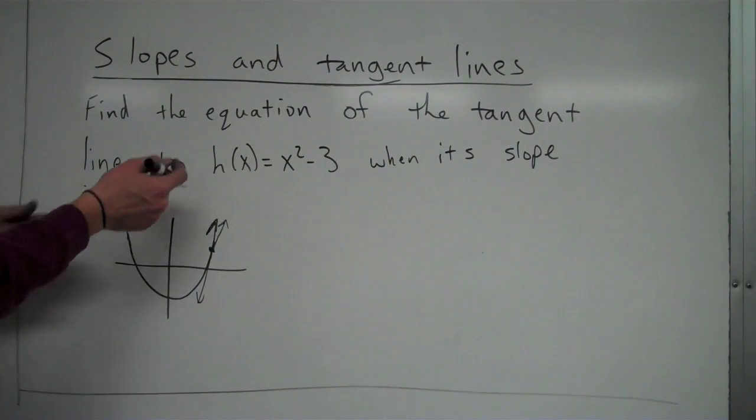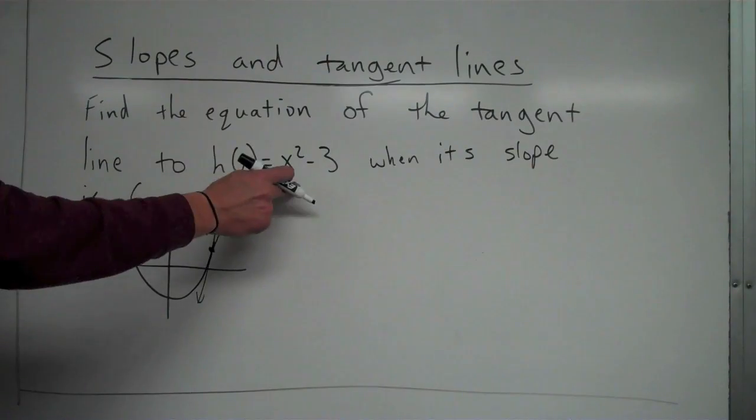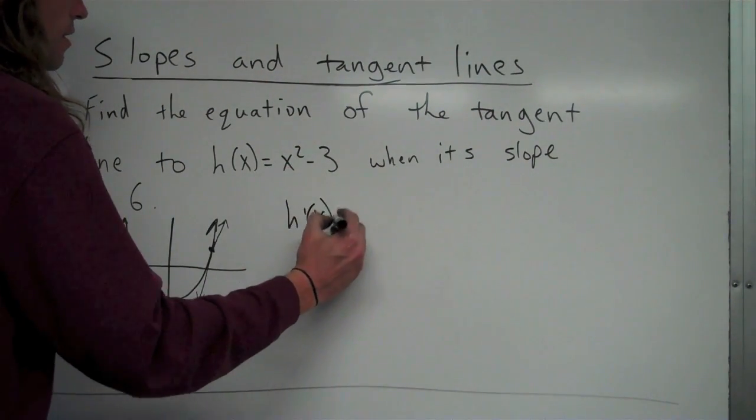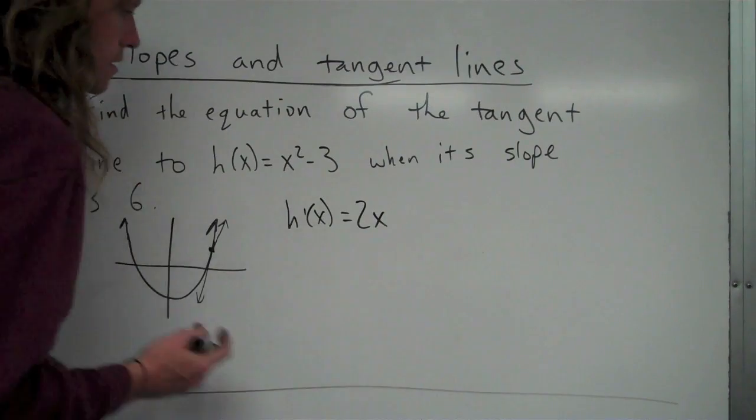So to find out when the slope of this is equal to 6, I'm going to take the derivative, since derivative tells us slope. So I get h'(x) = 2x.